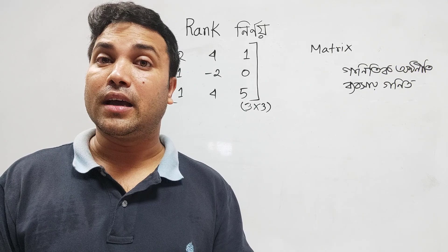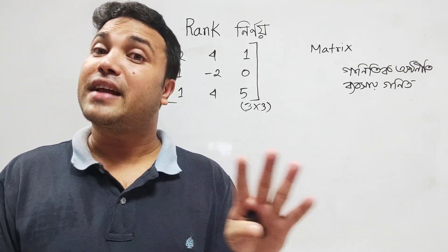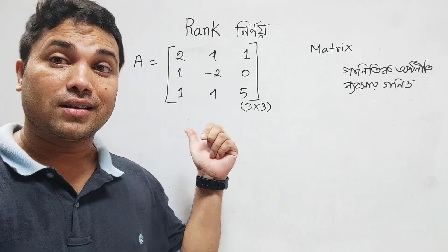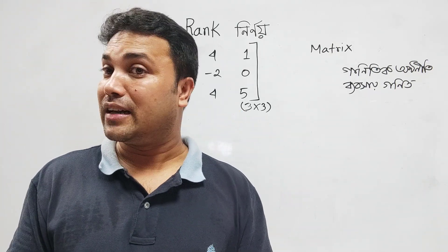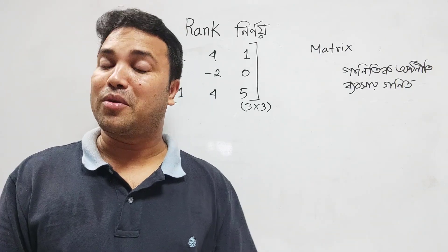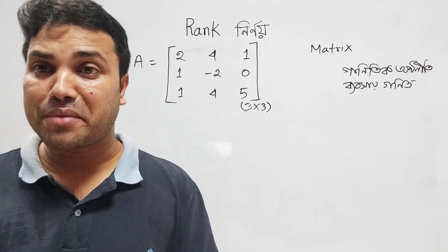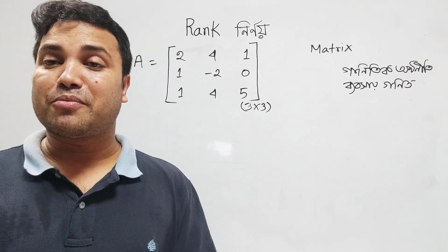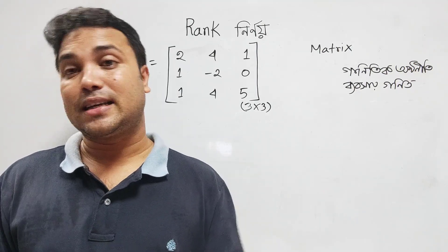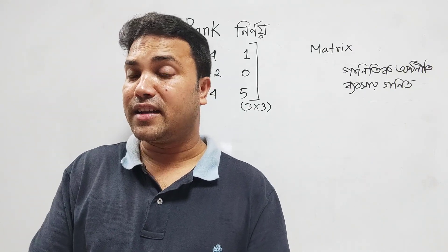When we see the matrix, our matrix is a column. Then we can see that the matrix is a column. What rank is the matrix? What is the column? 3, 3, 3. I will tell you that the rank is 9.